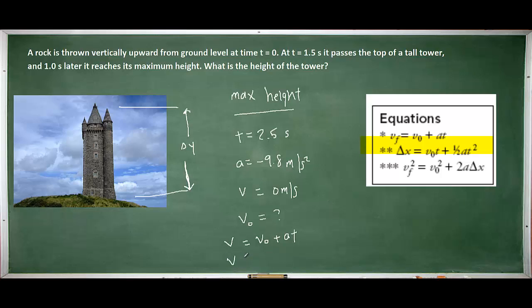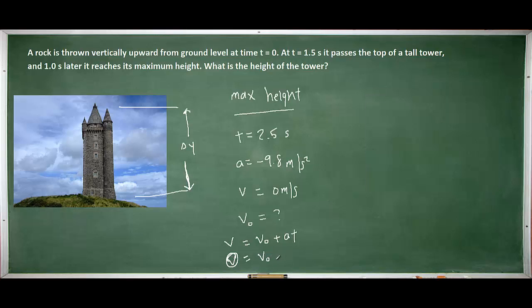So we can go ahead and plug in what we know. We know the final velocity is 0. The initial velocity we don't yet know. The acceleration and the time. Kind of running out of room here, but we should have calculated the initial velocity as 24.5 meters per second.